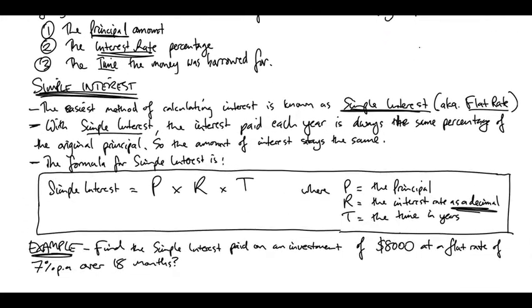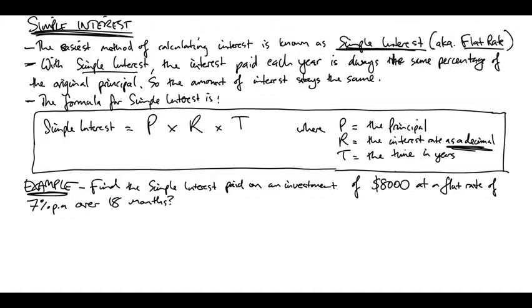So the first interest we need to deal with is called simple interest. It's the easiest method of calculating interest. Sometimes it's known as a flat rate, or flat rate interest. Now with simple interest, the interest you pay each year is a set percentage of the original. So let's say you borrowed $100, and you needed to pay like 10% per annum. 10% of 100 is 10. And let's say you're borrowing it over three years, that means you're always going to pay 10% of that original $100 every year that you borrow. So you're going to be paying 10 in the first year, 10 in the second year, 10 in the third year. So all up, you're going to pay 30 dollars of interest at the end.